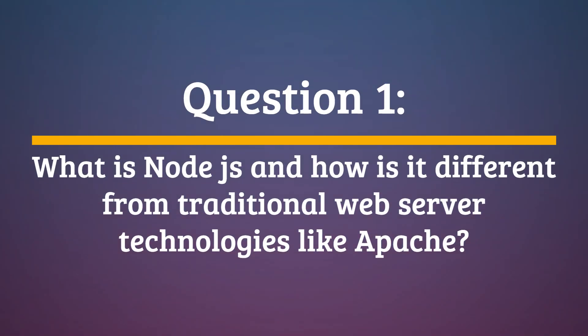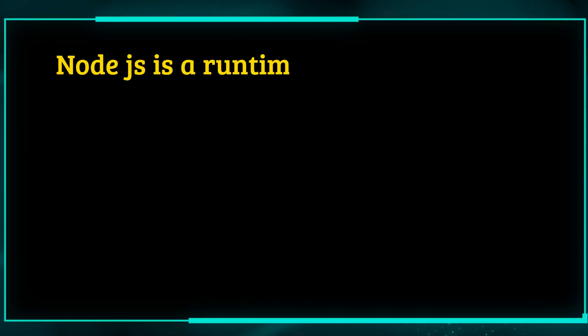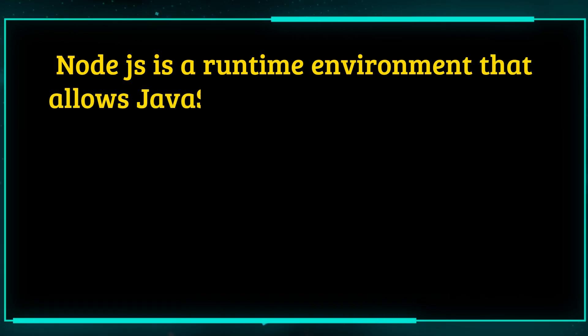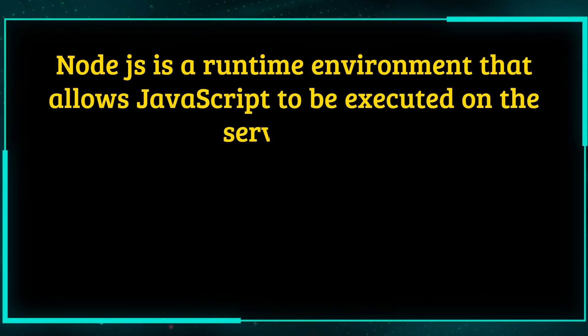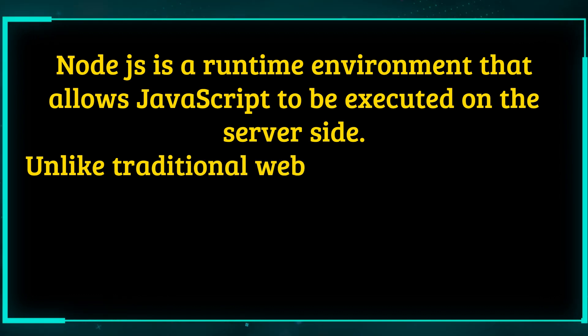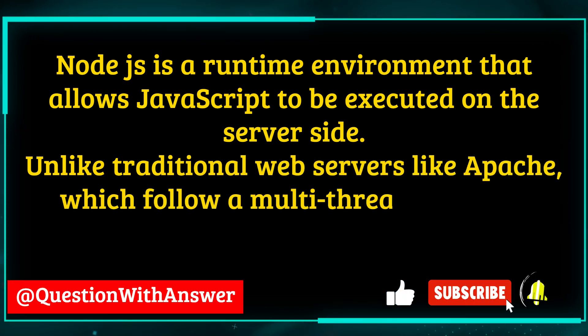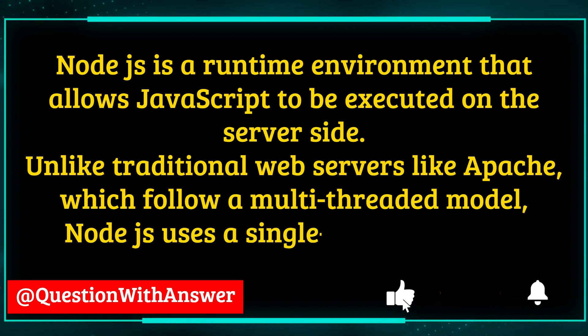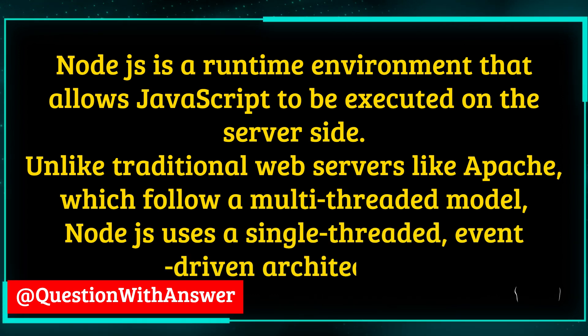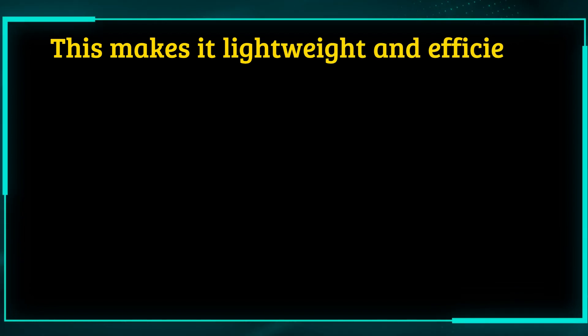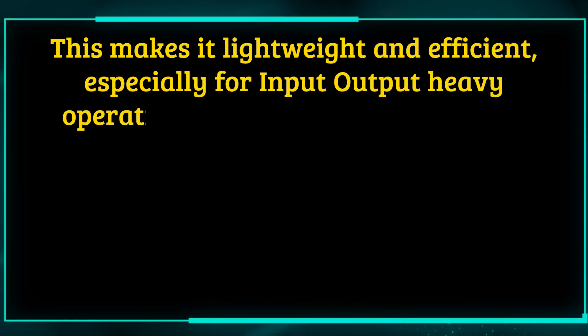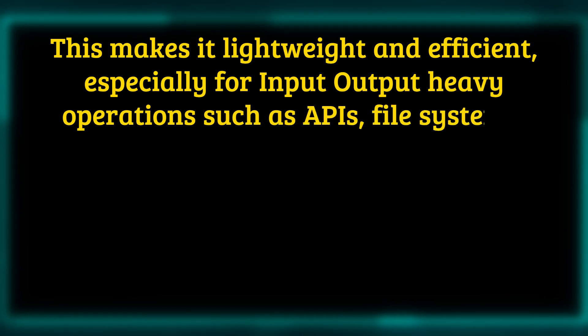Question 1. What is Node.js and how is it different from traditional web server technologies like Apache? Answer. Node.js is a runtime environment that allows JavaScript to be executed on the server side. Unlike traditional web servers like Apache, which follow a multi-threaded model, Node.js uses a single-threaded, event-driven architecture. This makes it lightweight and efficient, especially for input-output heavy operations such as APIs, file systems, or database access.